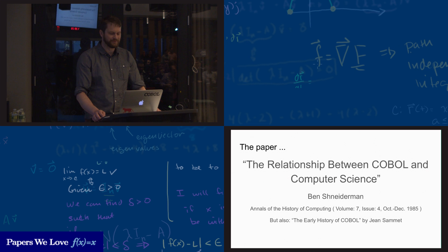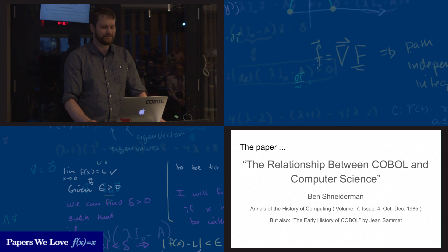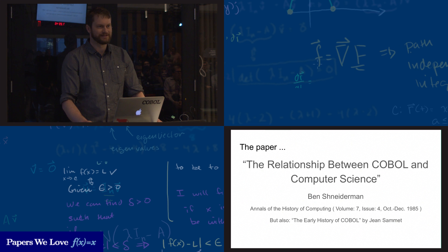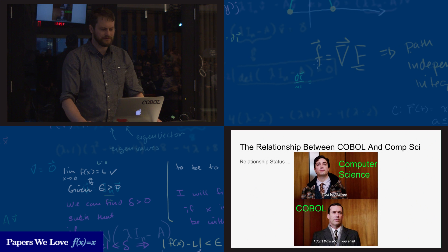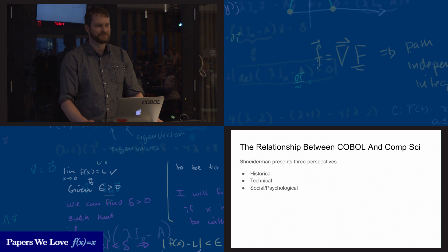This talk is based on a paper called The Relationship Between COBOL and Computer Science by Ben Schneiderman, but it's also strongly influenced by Jean Samet's early history of COBOL, which was a paper she wrote in the 1980s reflecting on her time on the COBOL Short Range Committee. The relationship between COBOL and academia has always been and still is a little bit frosty. Schneiderman's paper presents three perspectives on why that relationship is so fraught: historical, technical, and what he calls a social-psychological analysis.